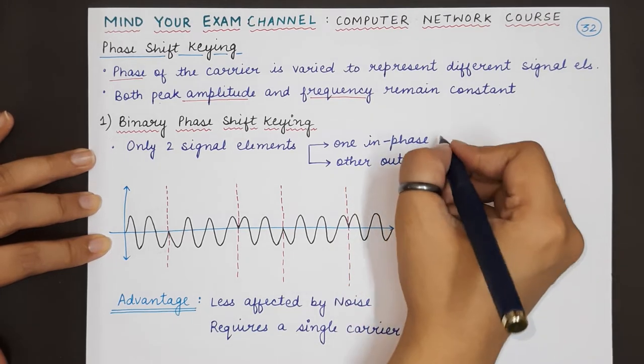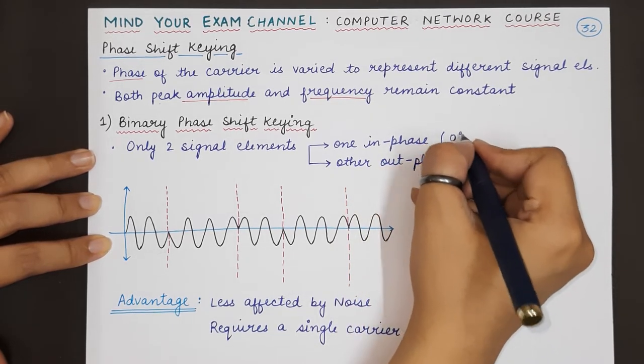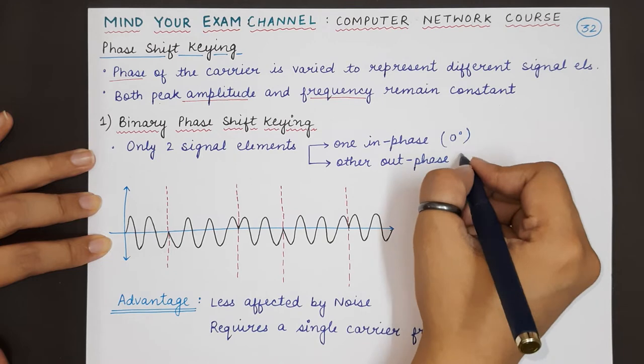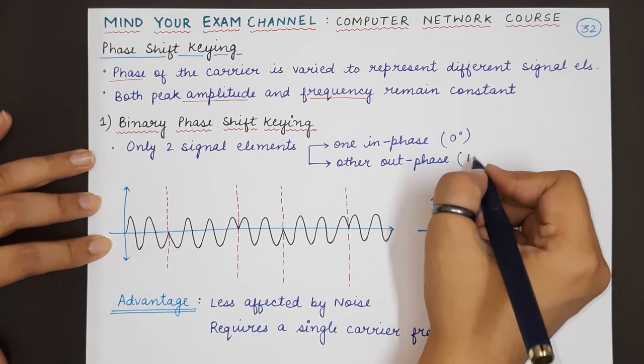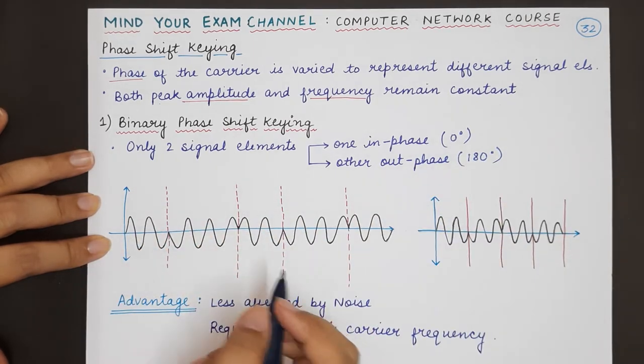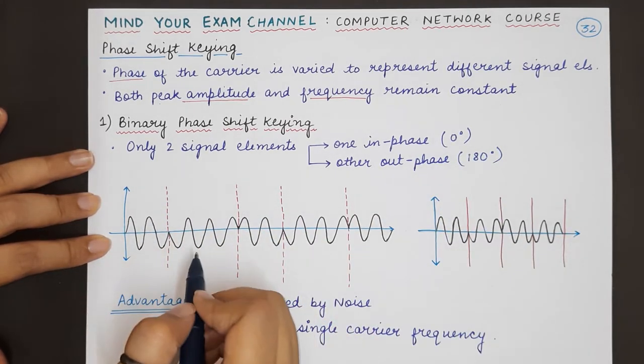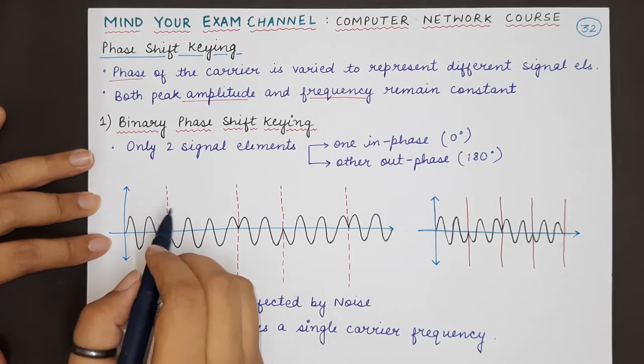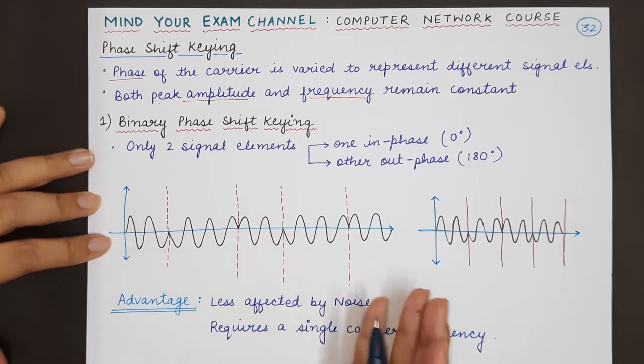Generally, the first one is represented by a phase of 0 degrees, and the second phase is represented by 180 degrees. As you can see here, this is the signal that has been obtained after performing phase shift keying.